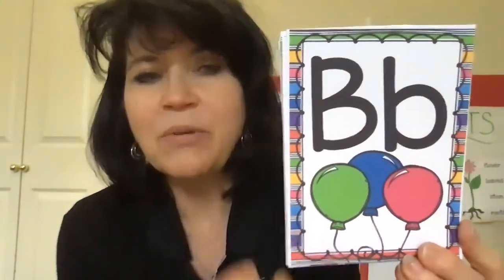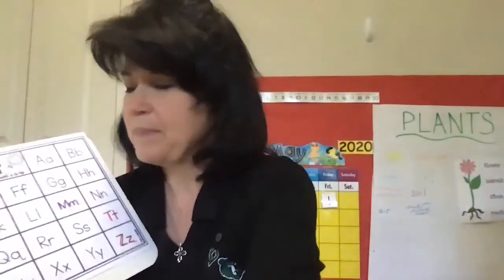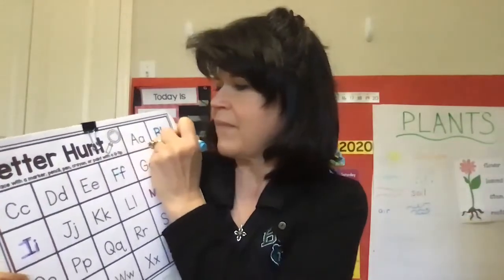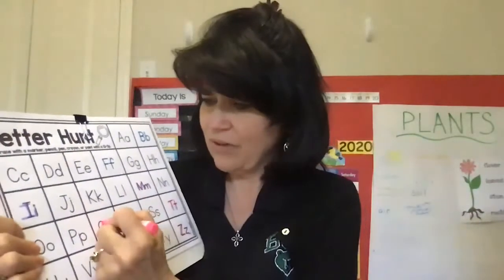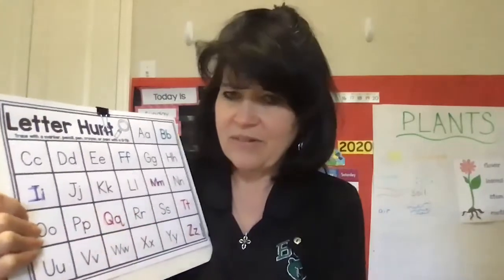Here comes our next letter. What letter does this say? That's right, it says B. What does B say? B says 'b' as in balloon. Find your B and mark your B — uppercase and lowercase. What letter is this? That's right, it's a Q. Q says 'q' as in queen. Find your marker and find it on your paper — trace over the uppercase and then the lowercase. Good job.